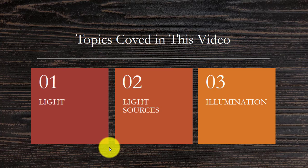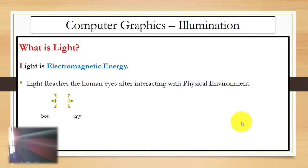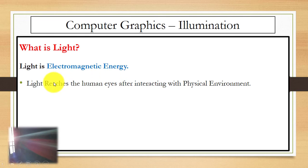Hello, in this video you will learn about what is light, different light sources, and what is illumination. The first question is: what is light? Light is an electromagnetic energy, and light reaches the human eyes after interacting with the physical environment.